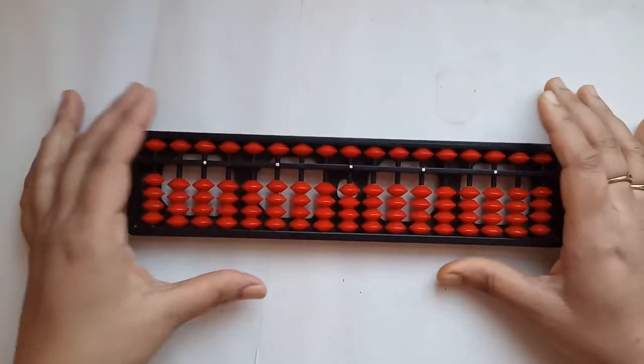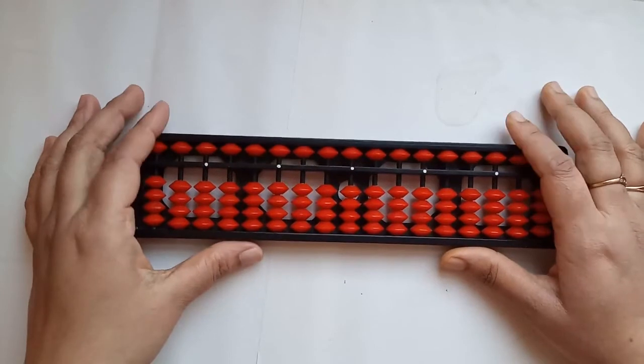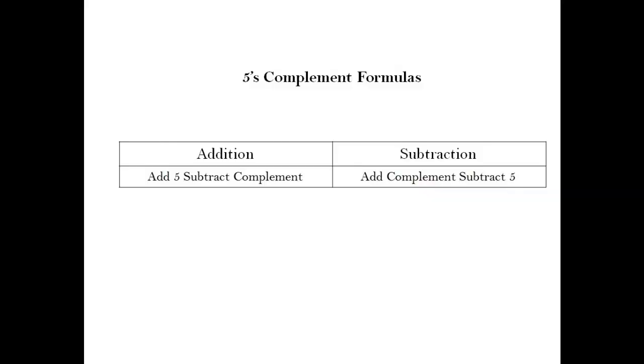So, we are going to use a complemented number for subtraction in case we do not have enough number of beads to proceed. At times, we might have to see if we could use a tens complement or a 5's complement. That, we do need to decide.